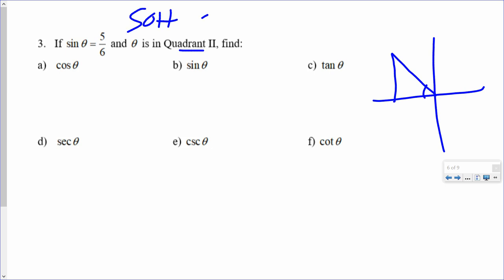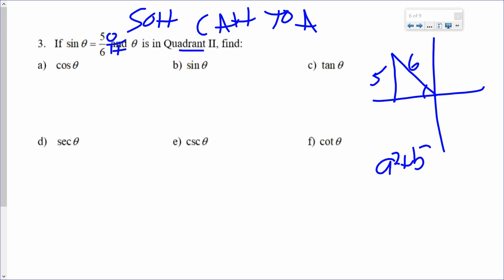SOHCAHTOA. So sine is opposite over hypotenuse. Opposite hypotenuse. To find the third side, is this a Pythagorean triple? No. So I have to do a squared plus b squared equals c squared. A and b are the legs. 5 squared plus x squared. C is the hypotenuse. 6 squared.